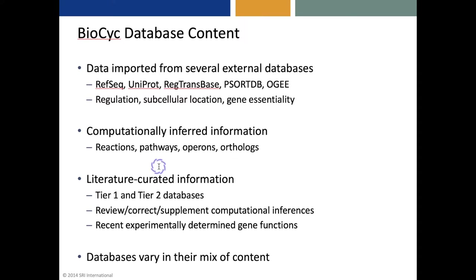BioCyc also consists of computationally inferred information, such as inferred reactions, metabolic pathways, and operons. It also includes literature-curated information in the Tier 1 and Tier 2 databases, where we have reviewed, corrected, and supplemented the computational inferences. We focus our curation efforts particularly on recently determined experimental gene functions, and different databases will vary in their mix of content.